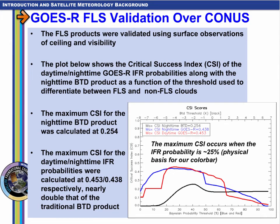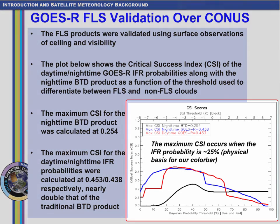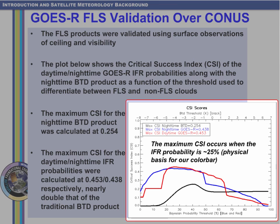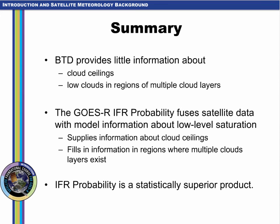GOES-R IFR probability is statistically superior to brightness temperature difference fields in predicting IFR conditions. If high clouds block the view, IFR probability can give a good signal based on model data. If stratus is elevated, IFR probability will screen out the region based on model data. Both of these examples will lead to better statistics for GOES-R IFR probabilities. The validation was performed using one day from each month and there are roughly 1,100 GOES East scenes. The CSI for IFR probability is roughly twice that of brightness temperature difference fields for lower IFR probability values. Brightness temperature difference fields are challenged to provide information about cloud ceilings as the satellite sees only the top of the cloud. Brightness temperature difference fields cannot give information when high cirrus obstructs the view of low clouds. IFR probability fields in these cases can augment the satellite to give a more complete description of the near surface saturation.